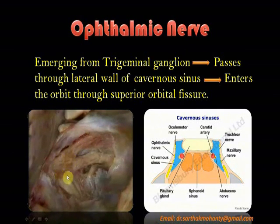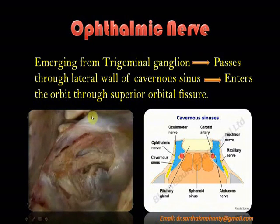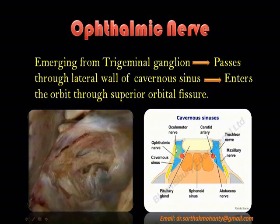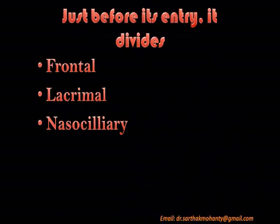The ophthalmic branch emerges from the trigeminal ganglion in the cavum trigeminale, passes through the lateral wall of the cavernous sinus — where we can see oculomotor, trochlear, ophthalmic, and maxillary nerves in the lateral wall — and then enters the orbit through the superior orbital fissure.